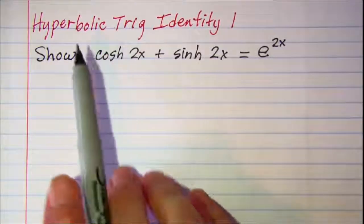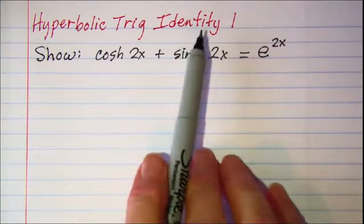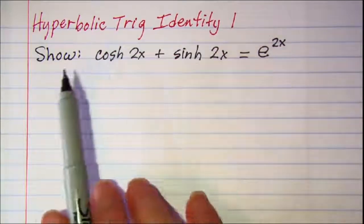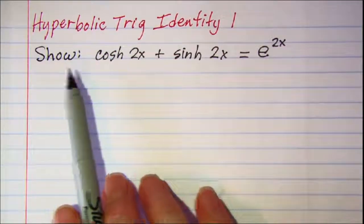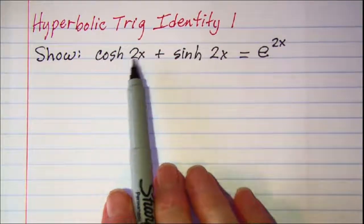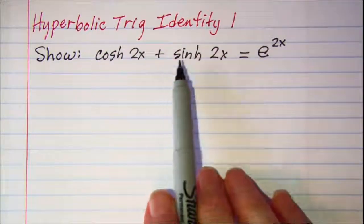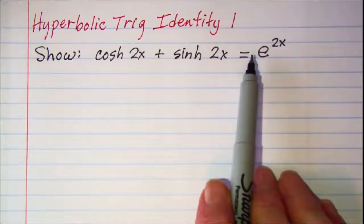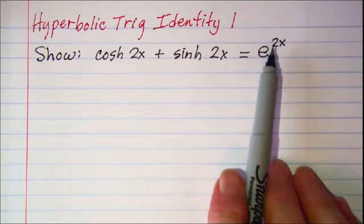In this video we'll be working on a hyperbolic trig identity. Our identity that we wish to show is that the hyperbolic cosine of 2x plus the hyperbolic sine of 2x is equal to e to the 2x.